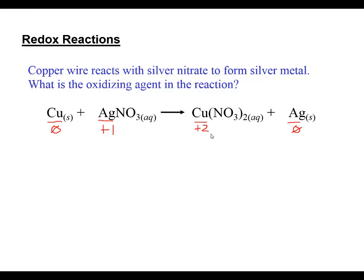The oxidation numbers for the monoatomic ions happen to be the same as their charge. Many times oxidation numbers will not be the same as charge, which is why I write them under the element symbol. Copper forming a higher oxidation number must be oxidized - it's going to be losing two electrons.